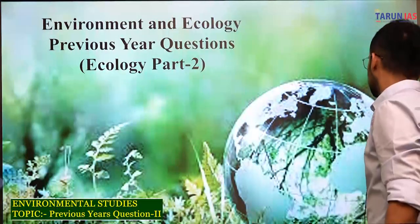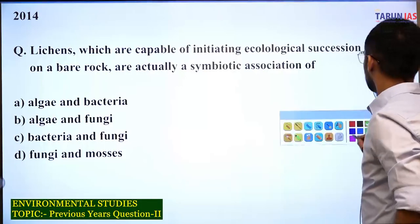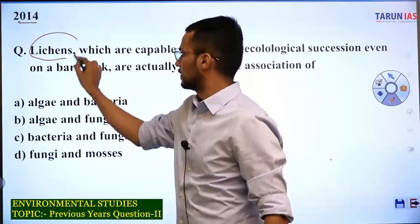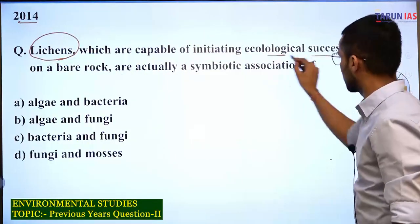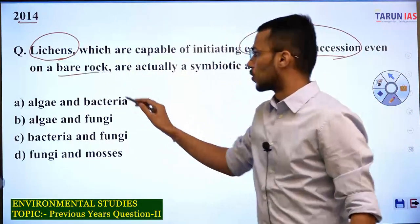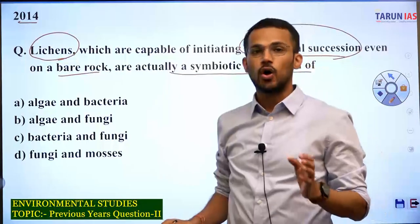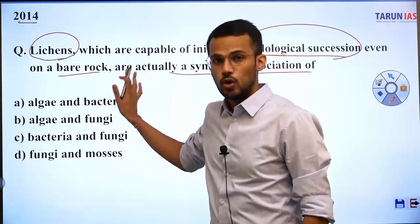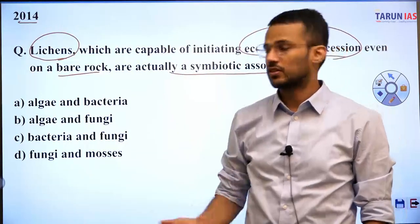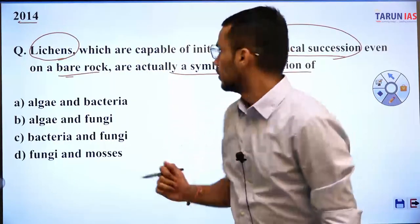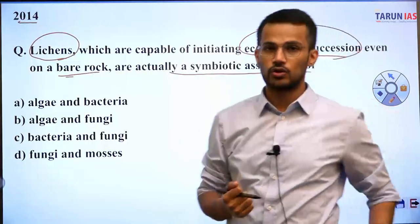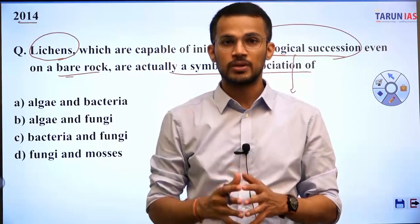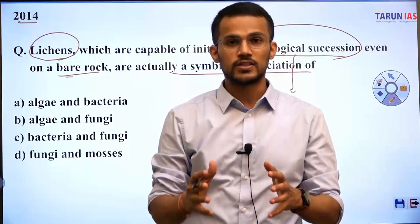The first question we will be discussing is from 2014. The question is: lichens, which are capable of initiating ecological succession even on a bare rock, are actually a symbiotic association of which of the following? The question is about lichens which can initiate ecological succession even on a bare rock. Ecological succession is the process in which the composition of a particular ecosystem changes over a period of time.